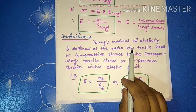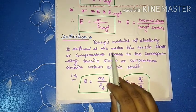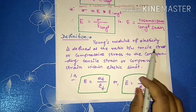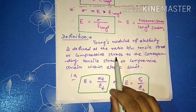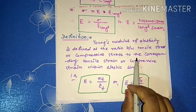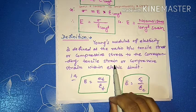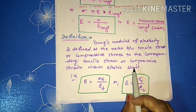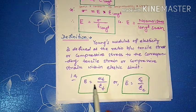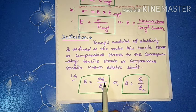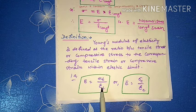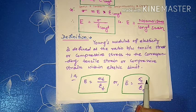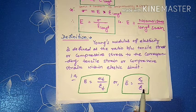Young's modulus of elasticity is defined as the ratio of tensile stress or compressive stress to the corresponding tensile strain or compressive strain within the elastic limit. That is, E equals sigma_t divided by epsilon_t, or E equals sigma_c divided by epsilon_c.